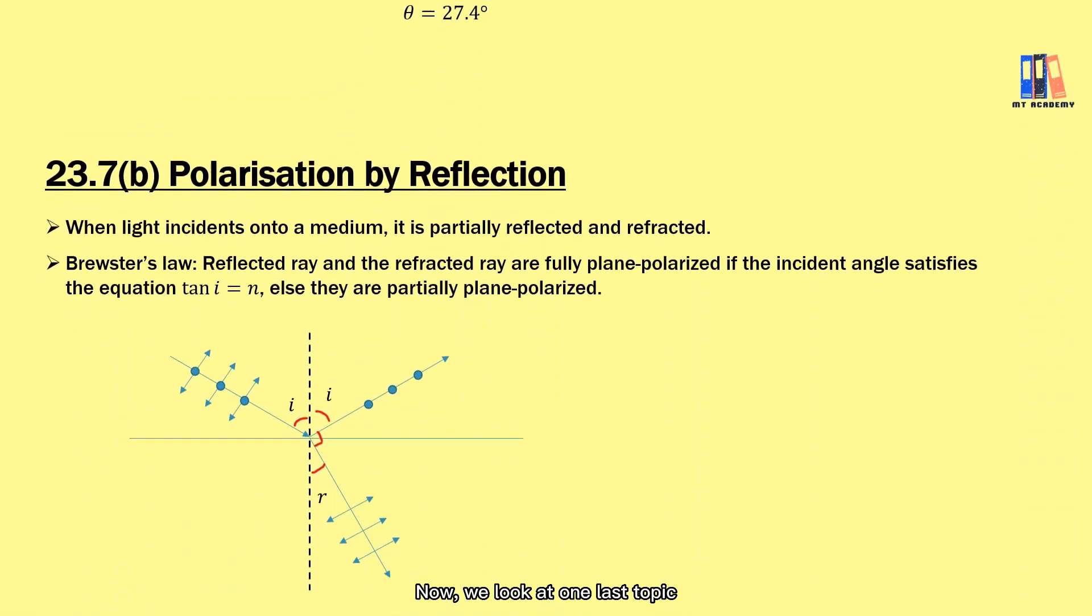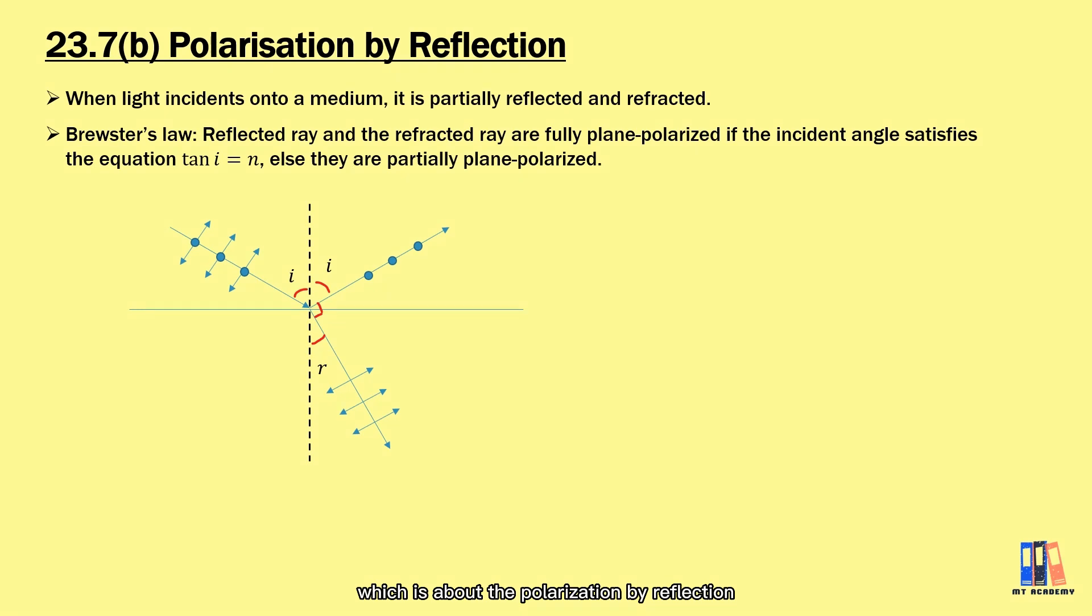Now we look at one last topic, which is about polarization by reflection. We learned that when light is incident on the surface of a medium, it will be partially reflected and refracted. Based on Brewster's law, both of them will be fully plane polarized if the incident angle satisfies the equation tan i = n, else they are only partially plane polarized.